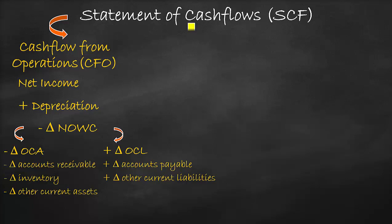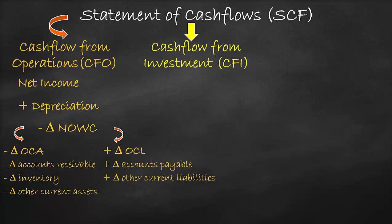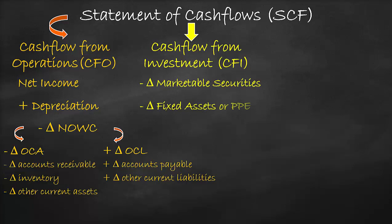Under the second category, we have cash flow from investment, which refers to non-operating assets. We subtract the change in assets, as the negative sign refers to a negative relationship between change in cash and change in assets — higher assets results in lower cash and lower assets results in higher cash. Examples of change in non-operating assets are change in marketable securities, change in fixed assets, and change in intangibles. Then we sum all these items to get net cash flow from investment.